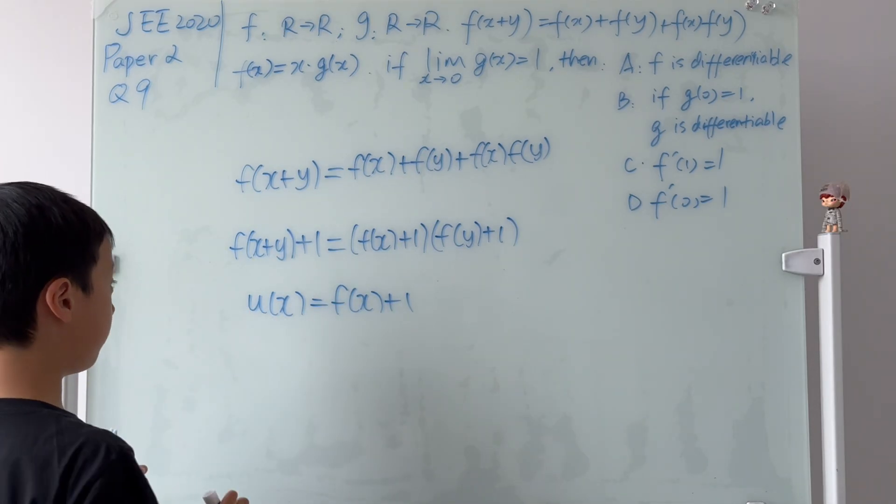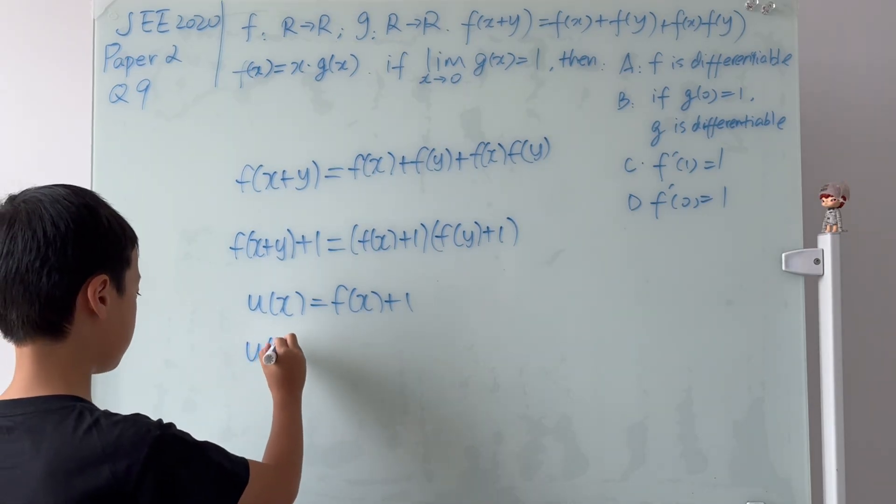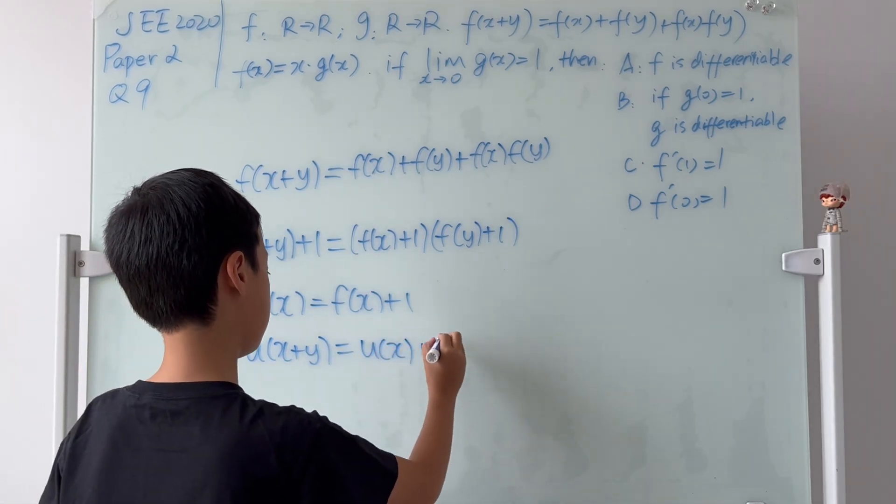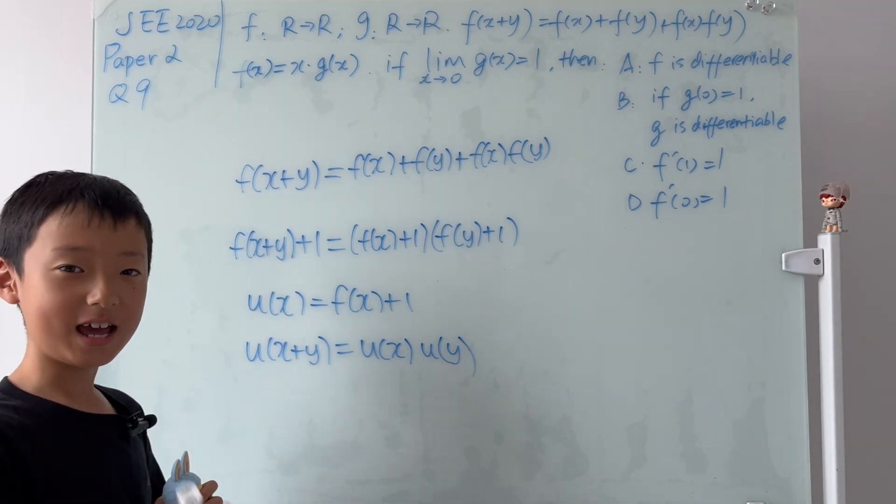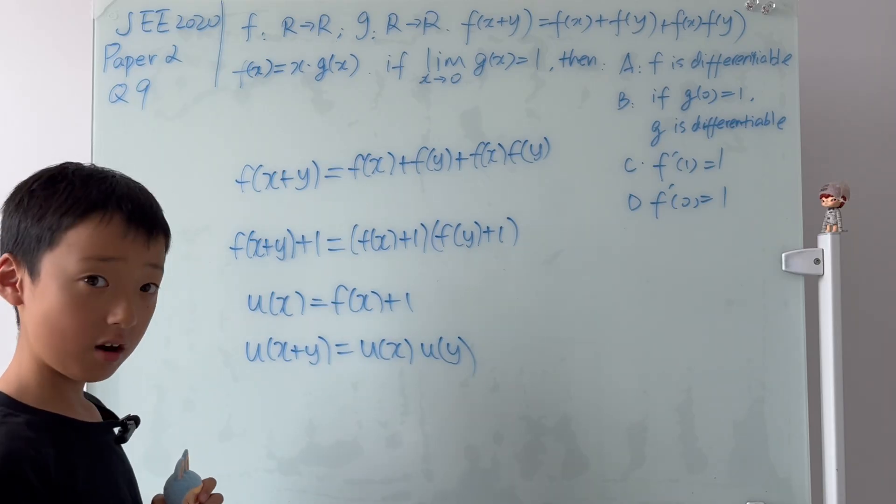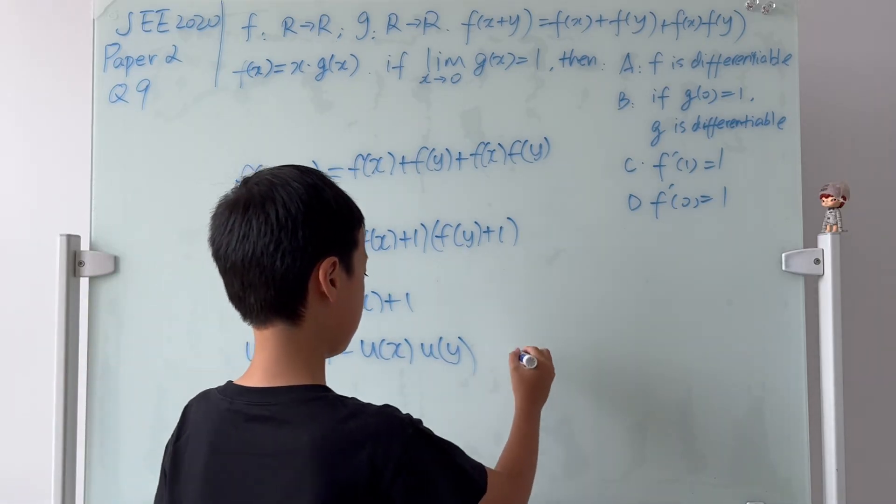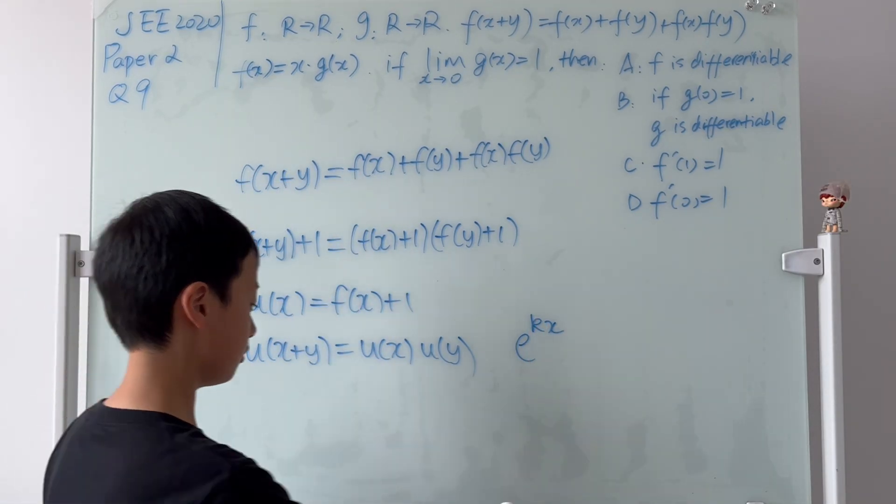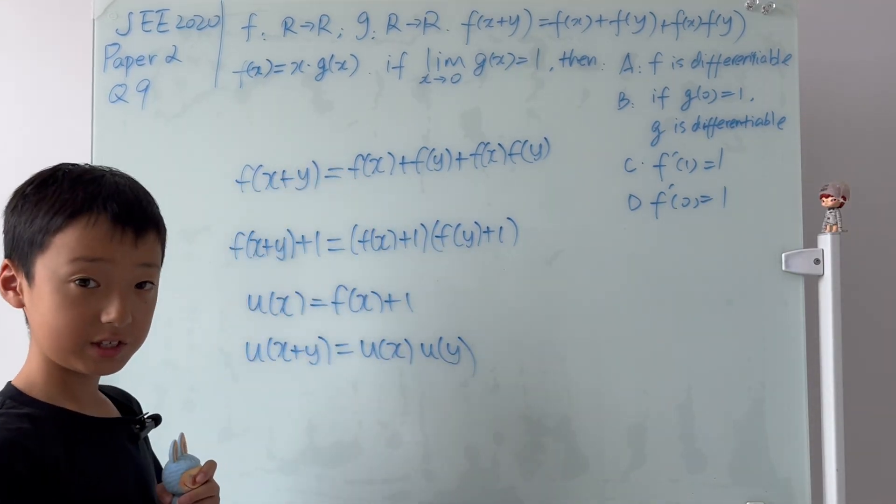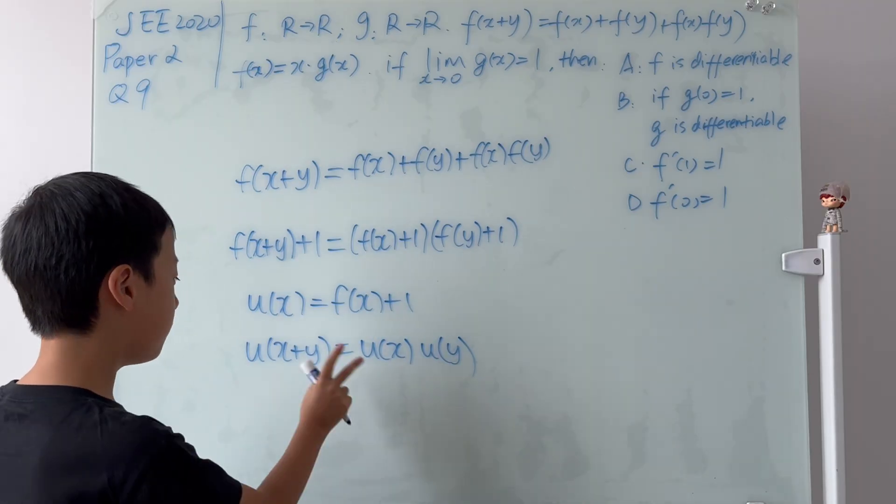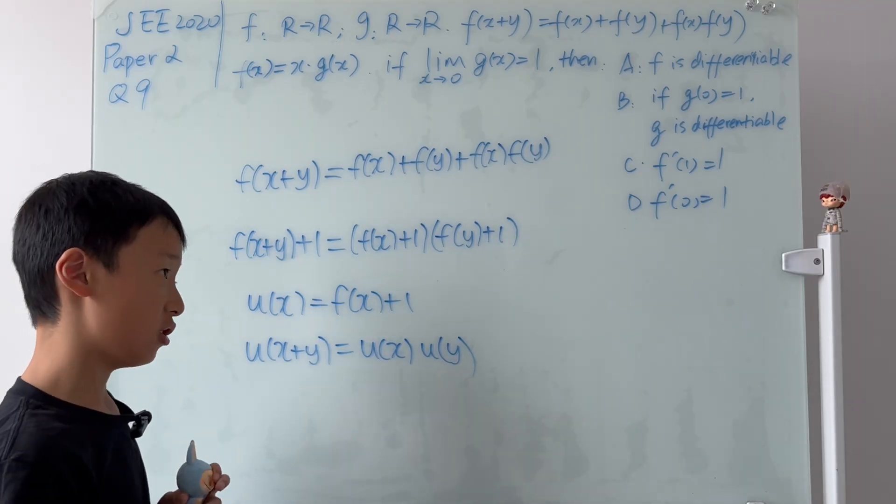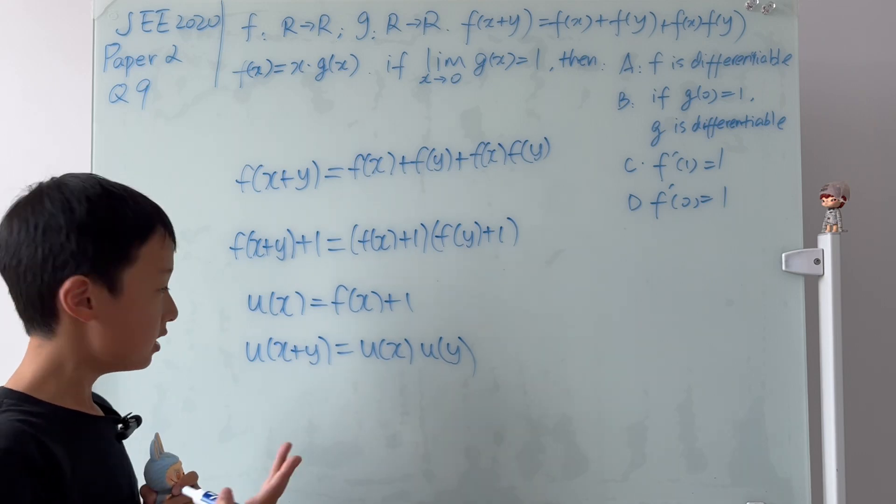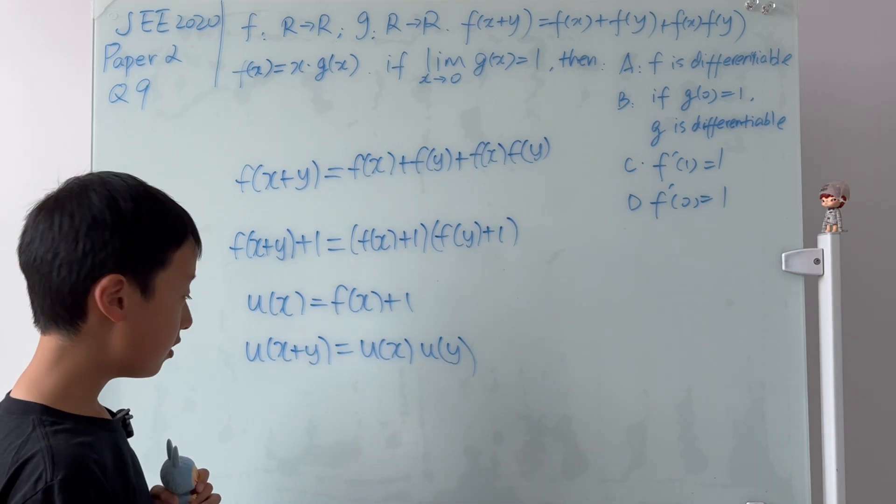Then we know that u(y) will be f(y) + 1, and that will also work for x+y. So we can put the new function down here. We know that it will become u(x+y), and this will equal to u(x) multiplied by u(y). And this is an exponential Cauchy functional equation, where the general solution to this type of equation is e to the power of kx.